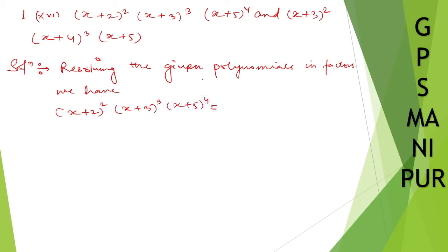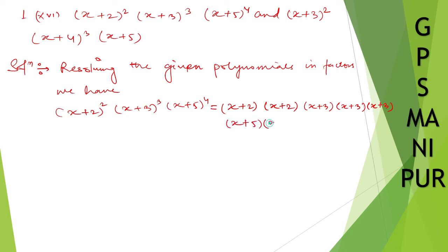So, (x plus 2) whole square can be written as (x plus 2)(x plus 2). (x plus 3) cube is (x plus 3)(x plus 3)(x plus 3). And (x plus 5) to the power 4 is (x plus 5)(x plus 5)(x plus 5)(x plus 5) — there are four (x plus 5) factors.